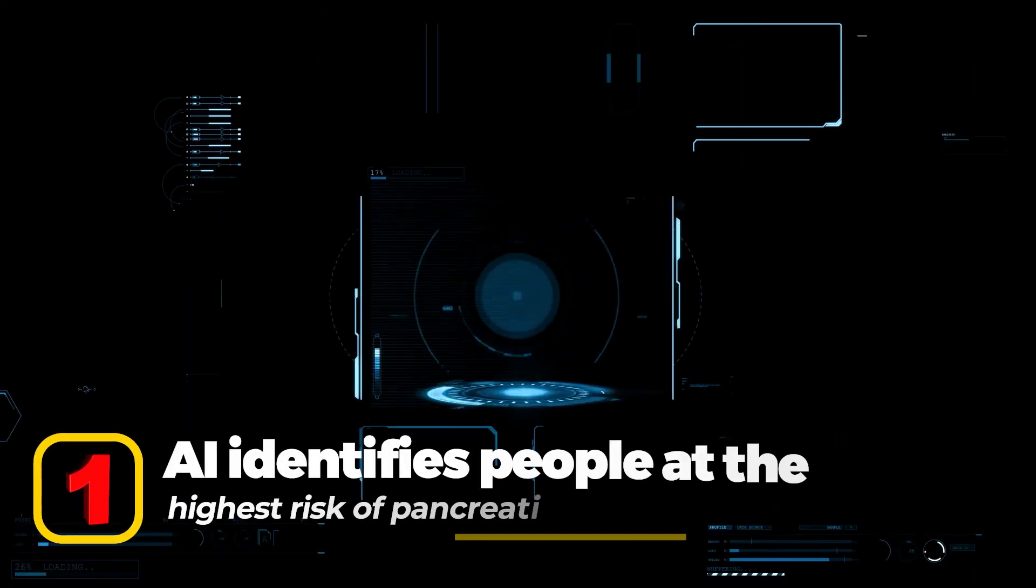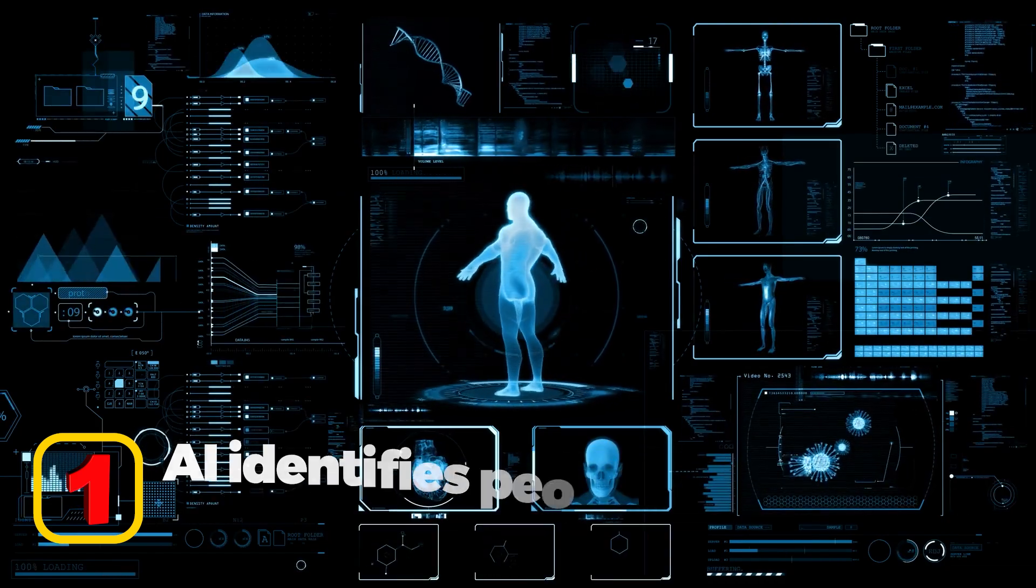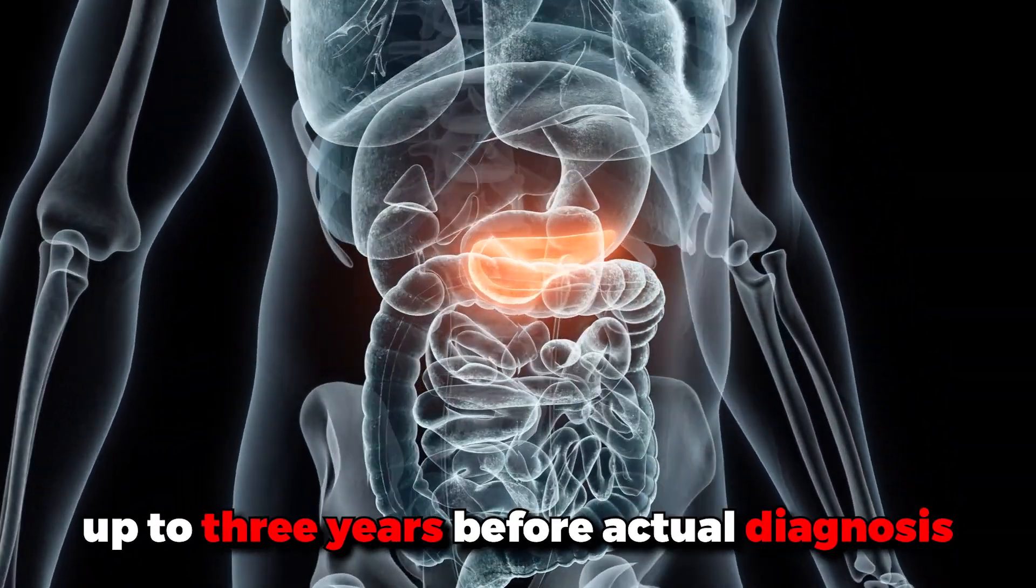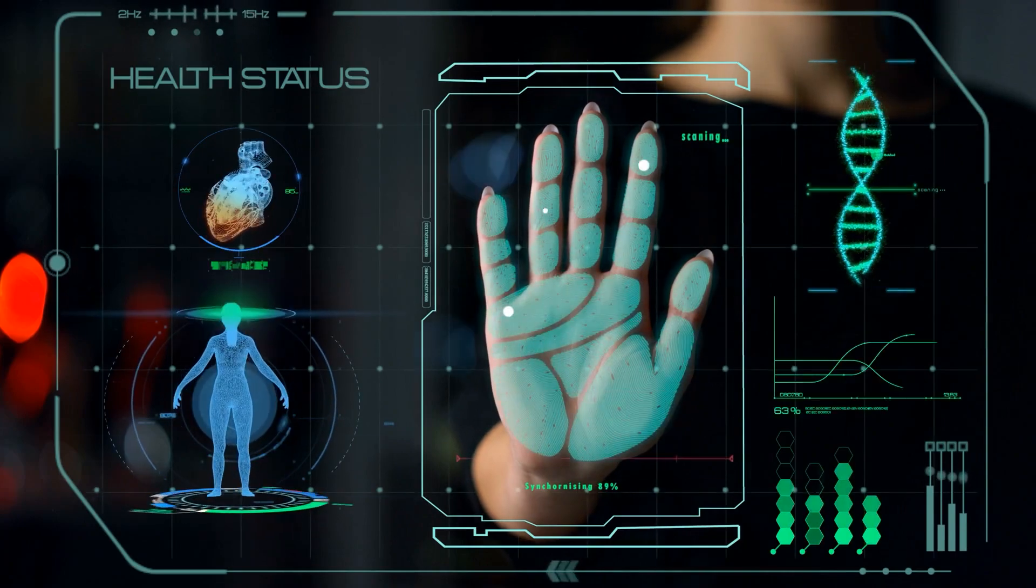Number 1: AI identifies people at the highest risk of pancreatic cancer. A new artificial intelligence tool can predict pancreatic cancer up to three years before actual diagnosis by identifying specific patterns of conditions that occurred in patients' health records.